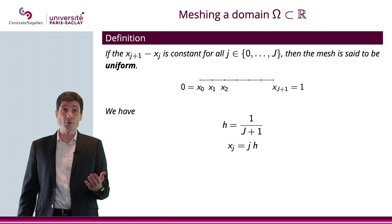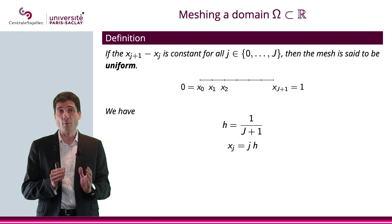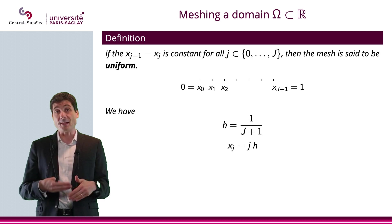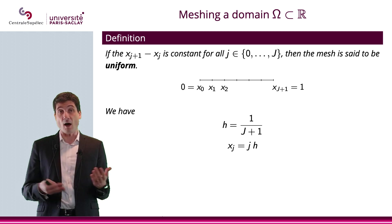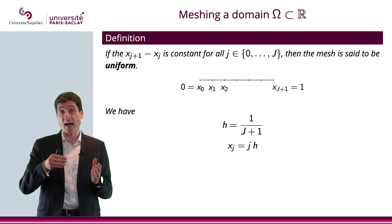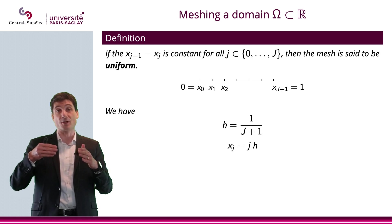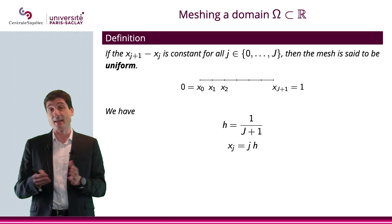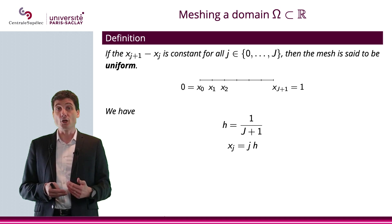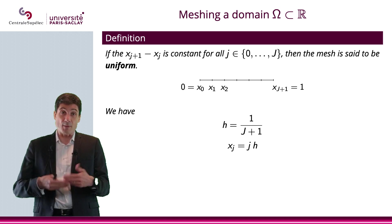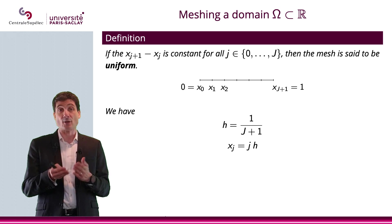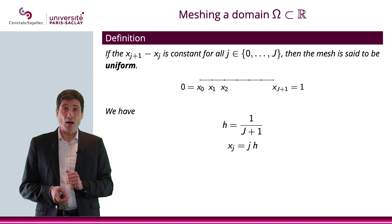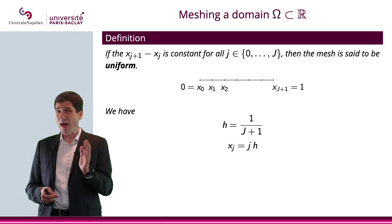A mesh is called uniform when the distance between two consecutive nodes is constant, called h. Since we have J interior nodes — or J+2 nodes including the endpoints — the step is h = 1/(J+1), and any node can be computed as x_j = j·h.